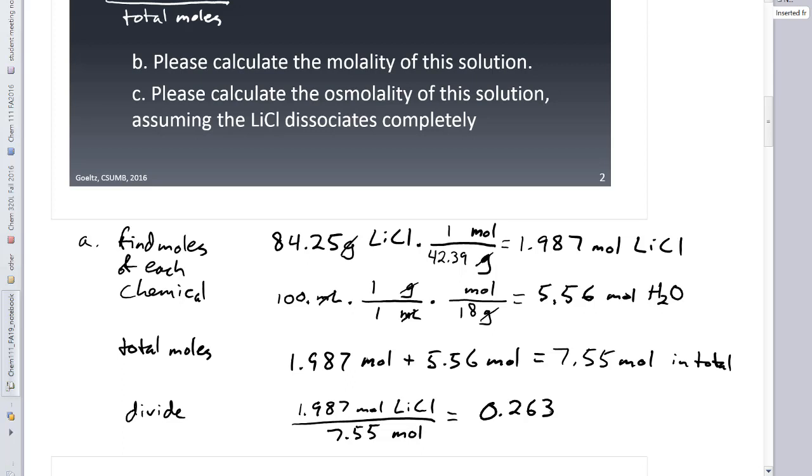And that will get me a literally a fraction. 1.987 divided by 7.55. This will get cut, since it's a multiplication division, this will get cut to 3 sig figs. And we'll wind up with .263. You could put this in scientific notation, but since it's a fraction like out of one, I think it actually makes more sense this way. This is a fraction, right, so it's moles over moles, so this has no units. So technically that's my mole fraction.